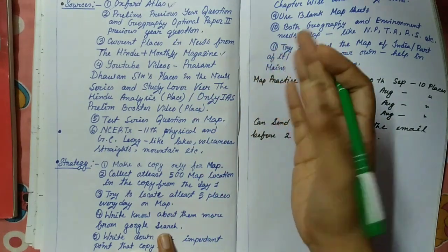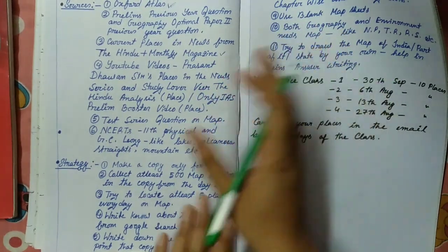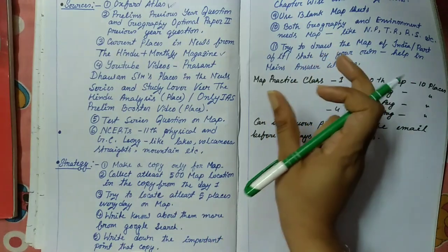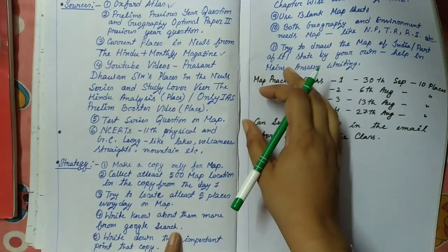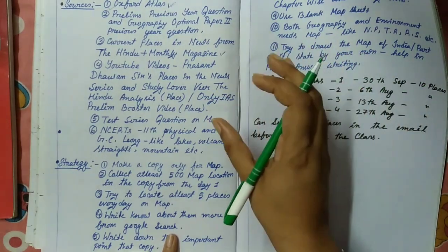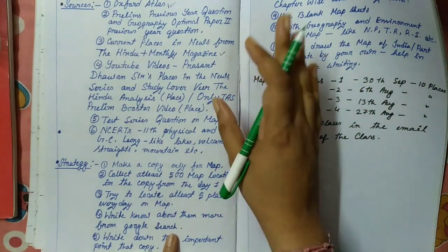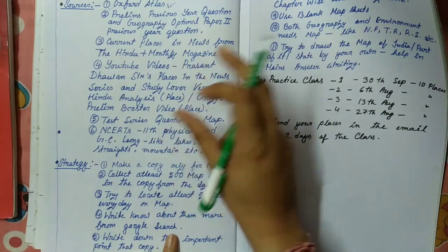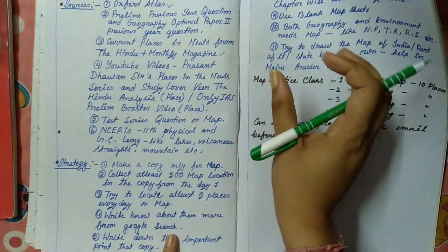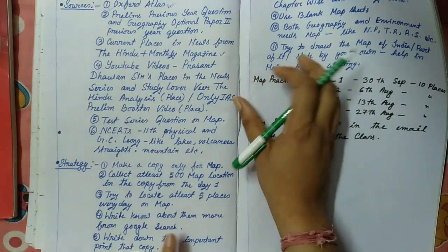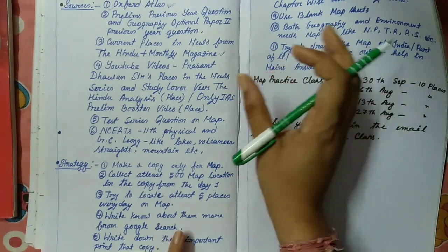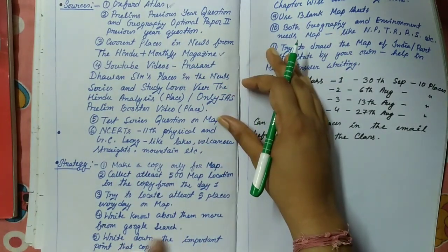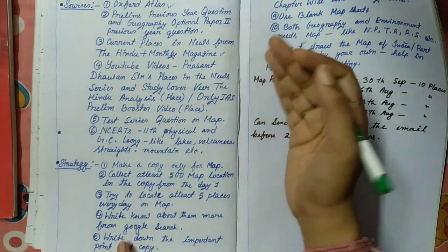Strategy number three: research those places further through Google search or Wikipedia to get complete knowledge. Books don't always give full details about a particular location. Search the place to find important facts. For geography optional aspirants especially, you need to mark places and also write significant points about each location. So gather that knowledge and maintain a notebook for those notes as well.